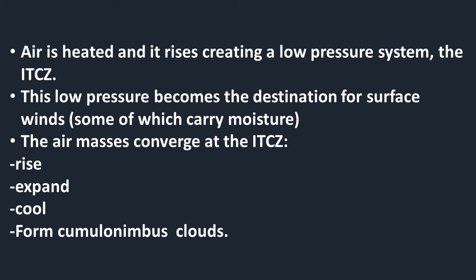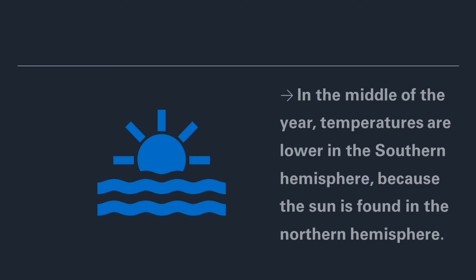Because of the high temperatures, air is heated and once it rises it leaves behind a region of low pressure, creating what we call the ITCZ. The area of low pressure becomes very attractive to surface winds, many of which are moist — good examples being the northeasterlies and the southwesterly monsoons. Upon arrival these winds rise, cool, and condense to form precipitation.